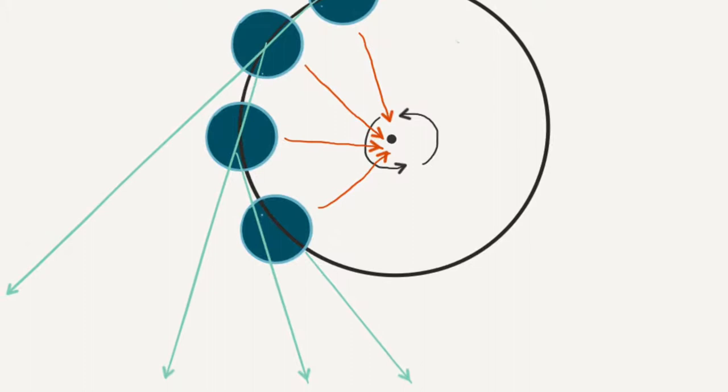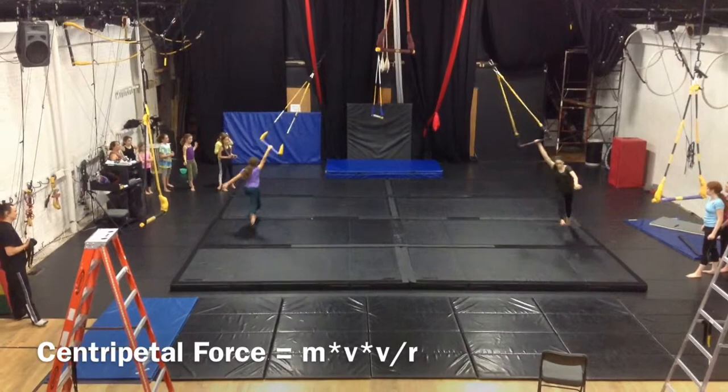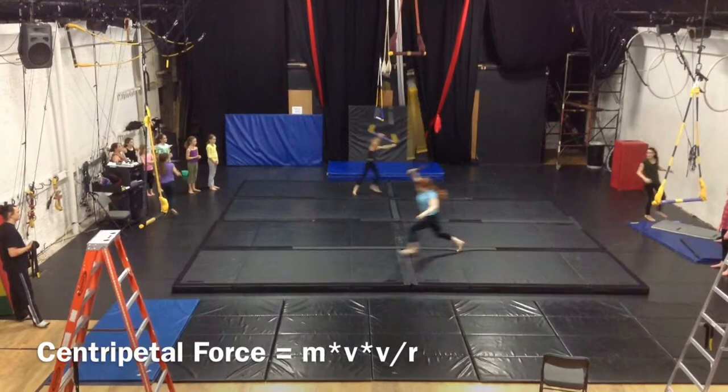Centripetal force isn't that hard to calculate. All you have to do is take the mass of the body being pulled, multiply it by the velocity she's traveling at, multiply it by the velocity again, and divide the whole thing by the radius of the circle.